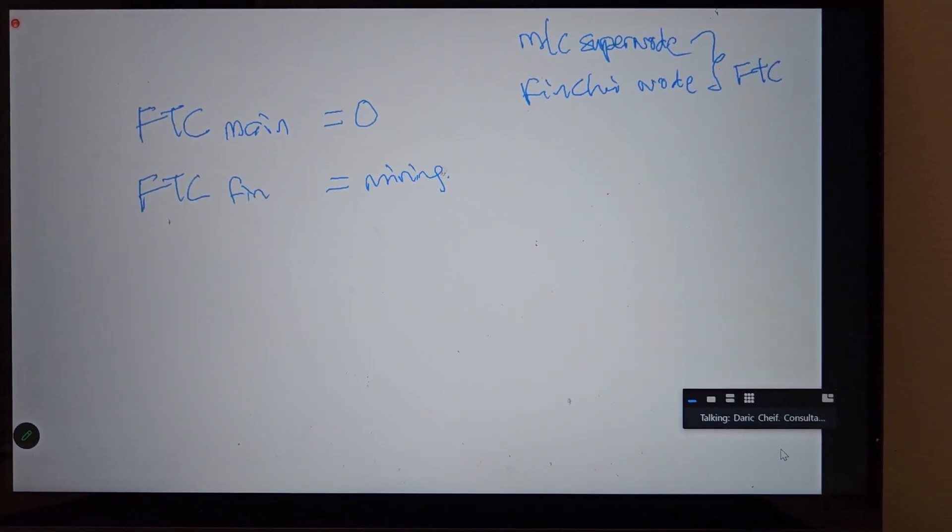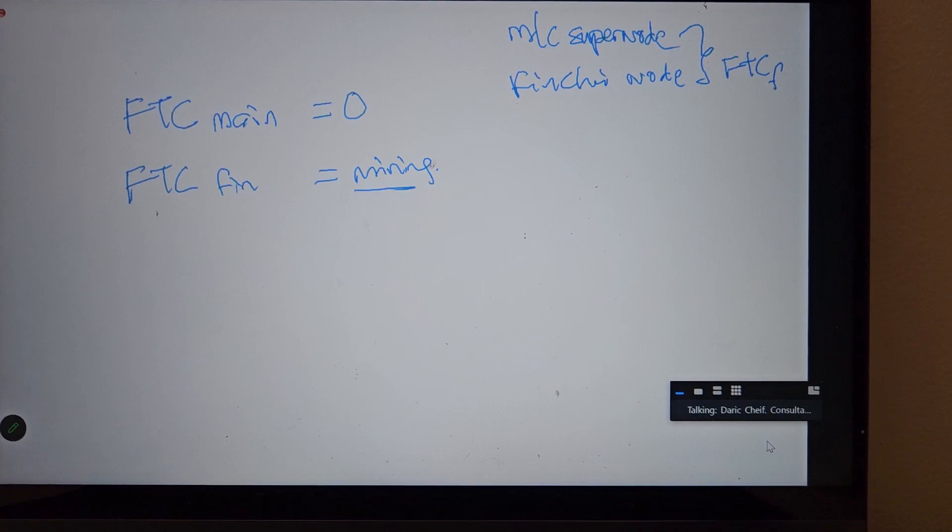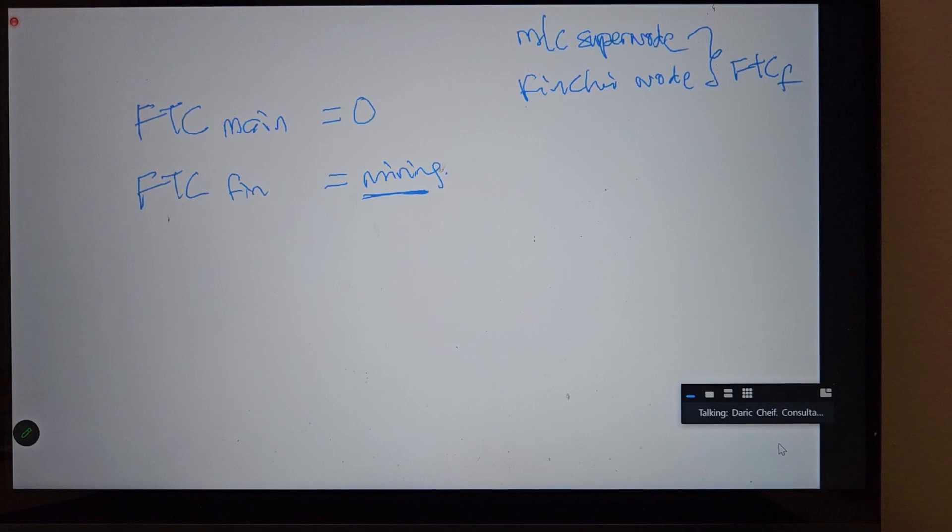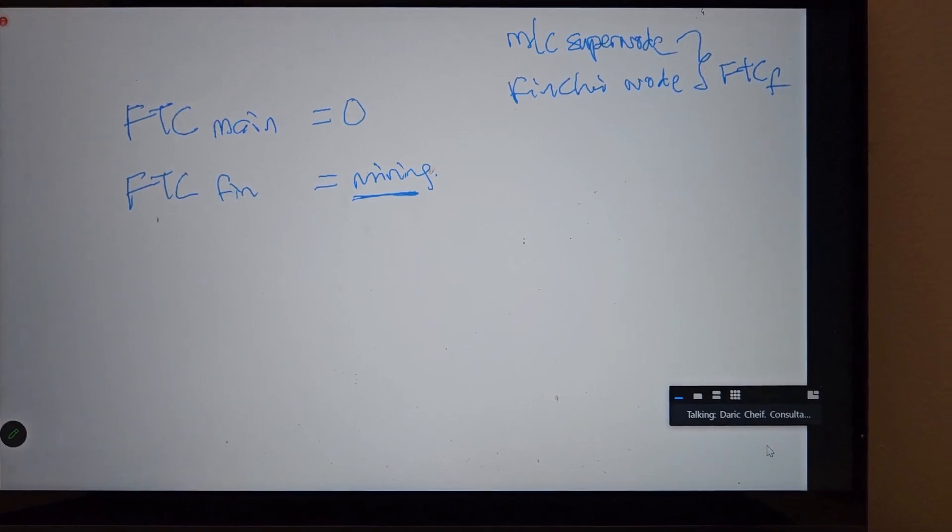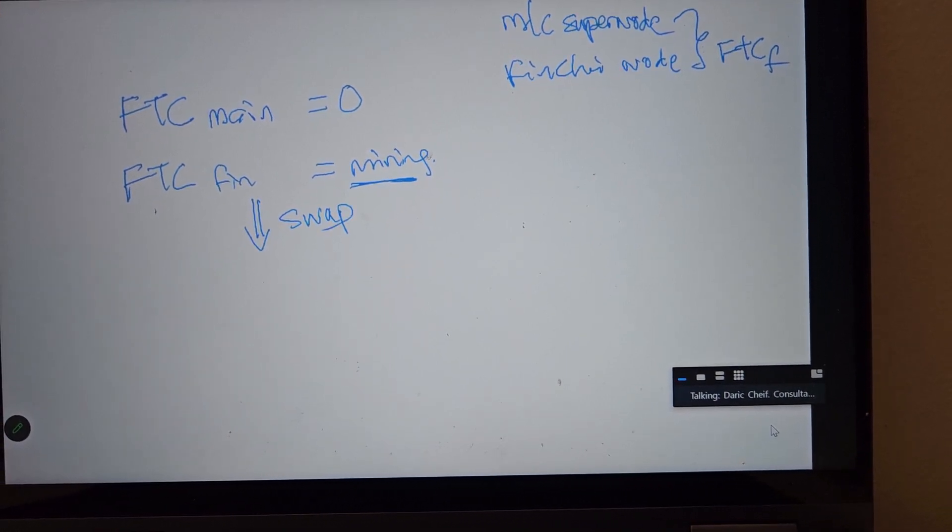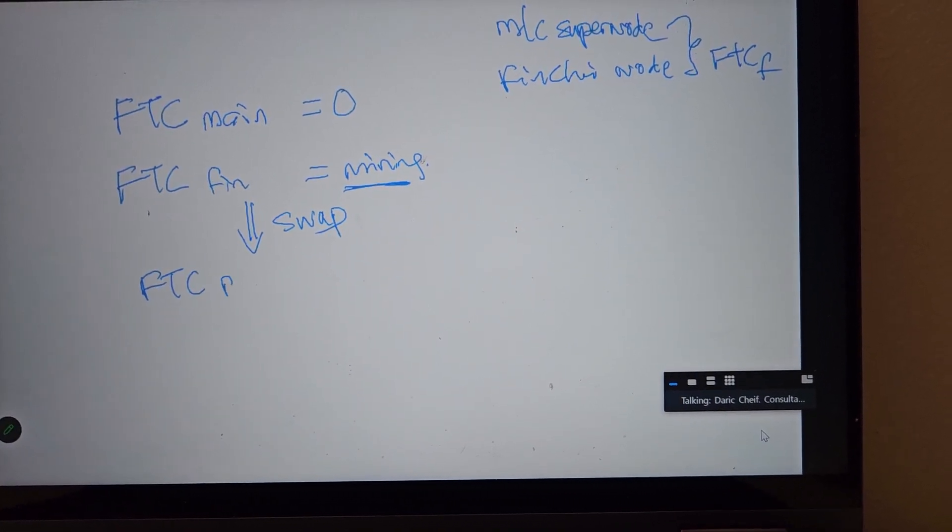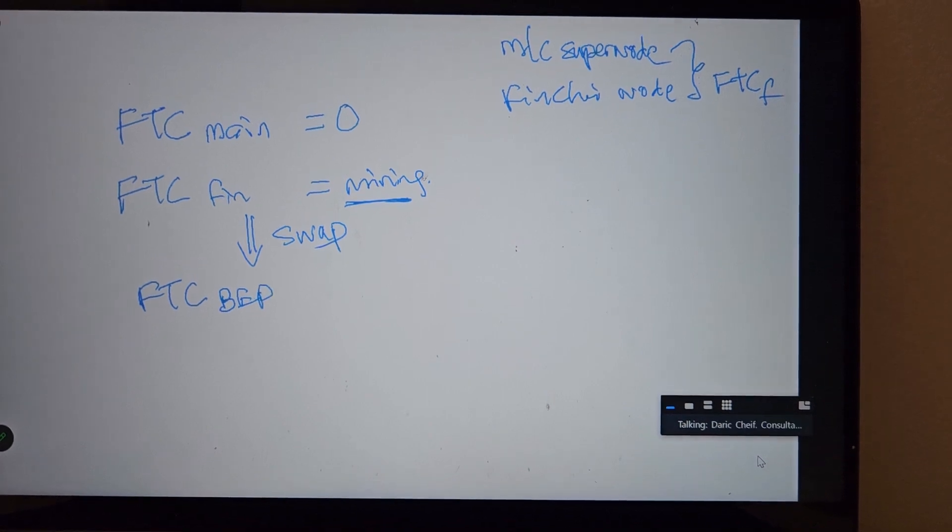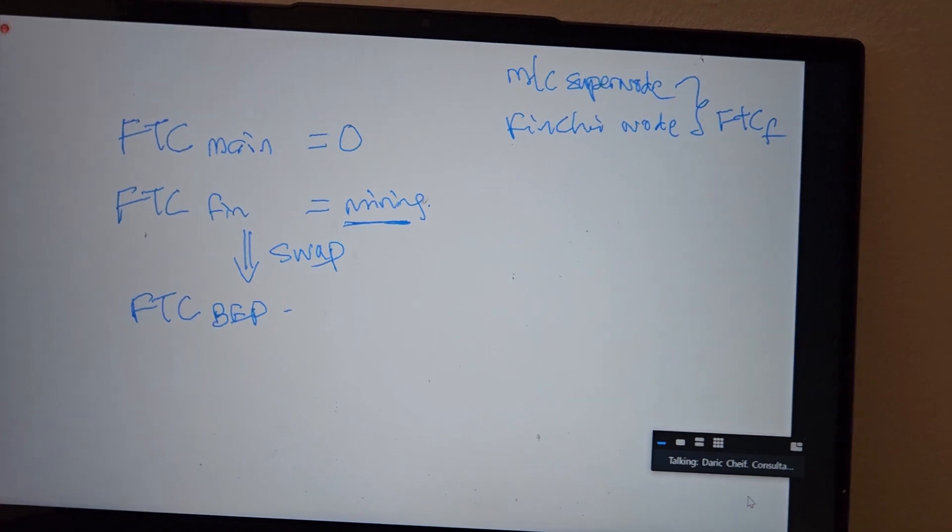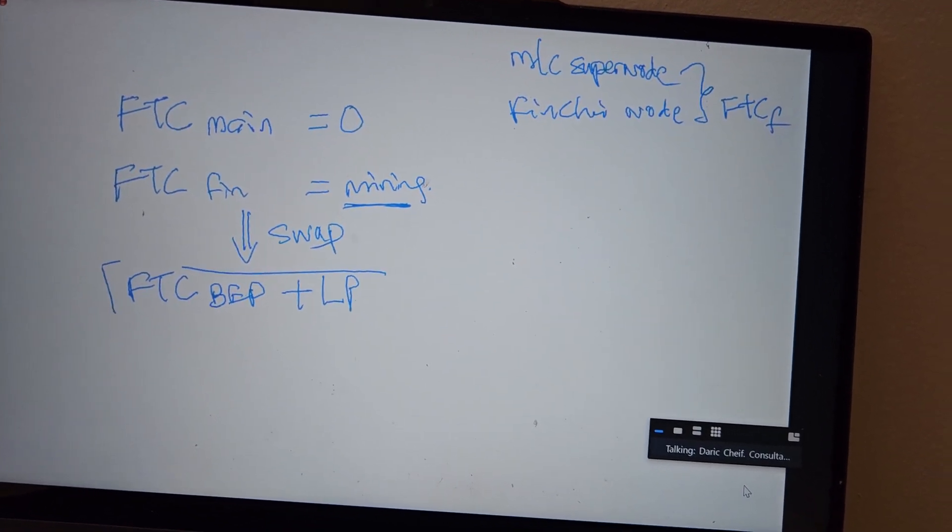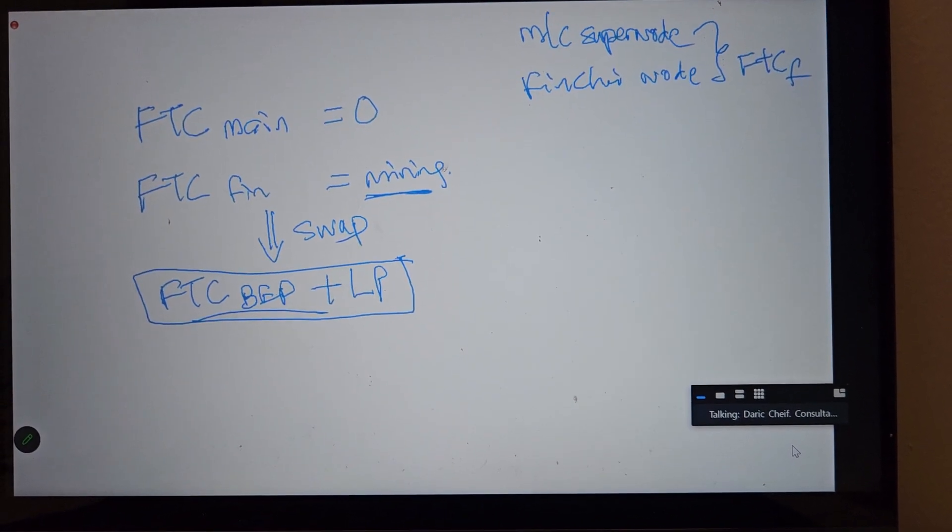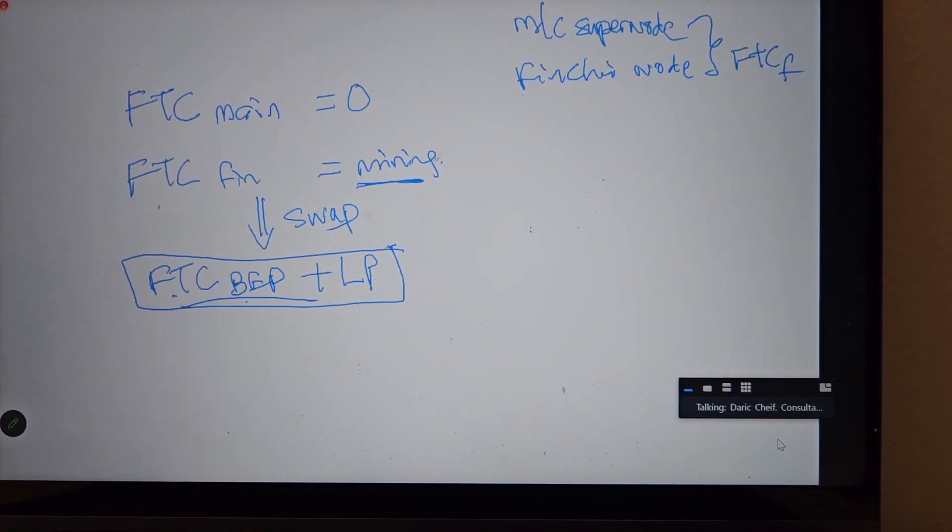FTC F - this is what you get. Once you want to add into the liquidity, you must swap to FTC BEP. After swap, then you only add to LP.